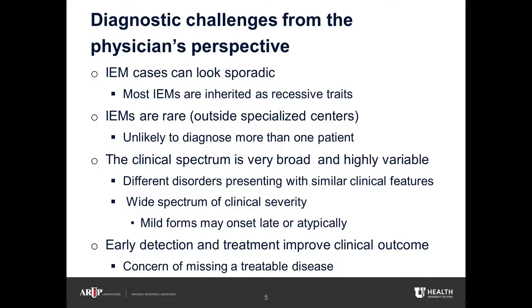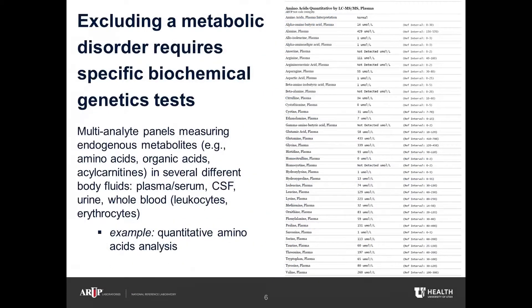The clinical spectrum is also very broad and highly variable. Different disorders can present with similar clinical features, or the same disease can manifest in a wide spectrum of severity, with milder forms presenting later or atypically. Most importantly, early detection and treatment improve clinical outcome, so it's critical to identify those patients as soon as possible. Inborn errors of metabolism can be suspected from routine laboratory testing, like an elevated plasma ammonia or an abnormal lactate level in the blood.